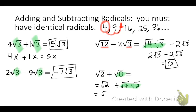Next, square root 2 plus the square root of 4 is 2, giving us 2 square root 2. We've got a lot of 2's in this problem! Now we add: 1 square root 2 plus 2 square root 2 equals 3 square root 2.